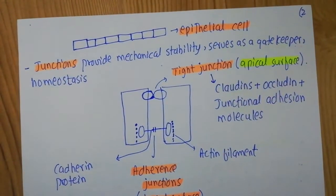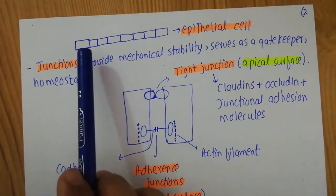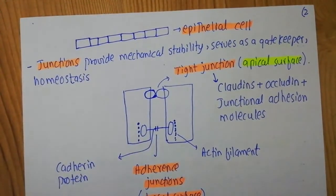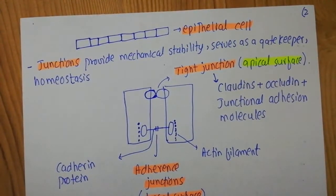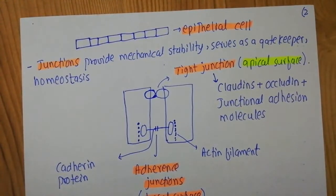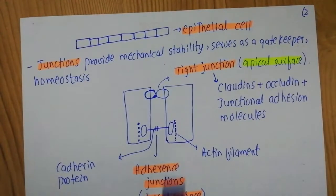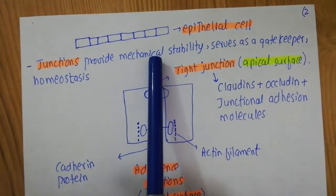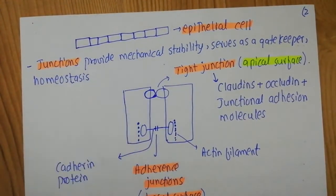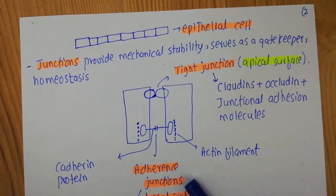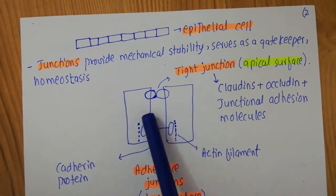The skin cells are made up of epithelial cells, and as you can see, they are very tightly connected to each other, working as a barrier for the entry of pathogens into the body. These epithelial cells are connected by different junctions, whose function is to provide mechanical stability, serve as a gatekeeper, and maintain homeostasis. Two important junctions are the tight junction and the adherence junction.